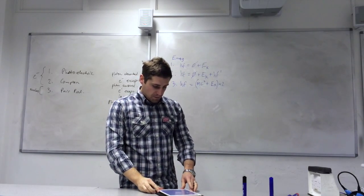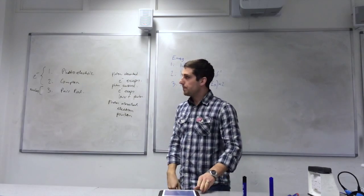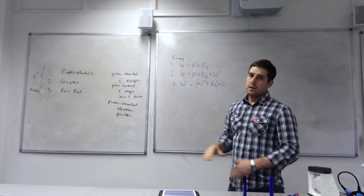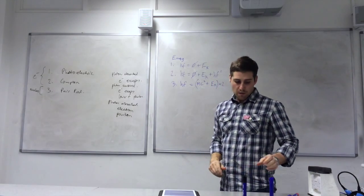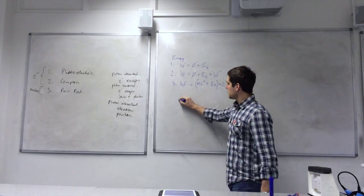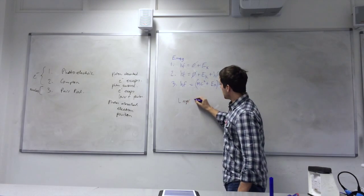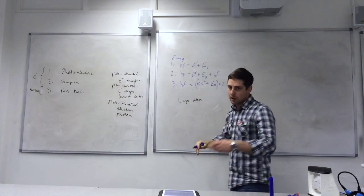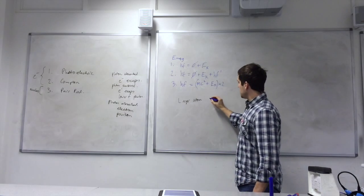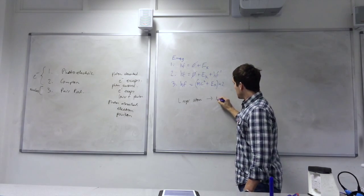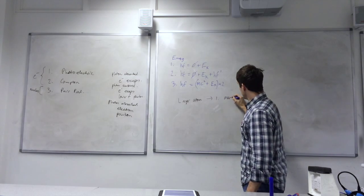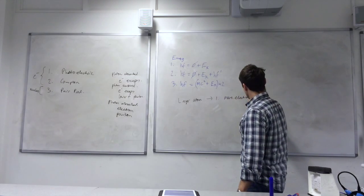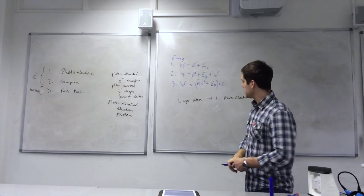The amount of absorption in different materials, then, is dictated by the likelihood of these three interactions happening. If you have a larger atom, atom with a larger mass number, then one is more likely, because you have more electrons per unit volume of space.